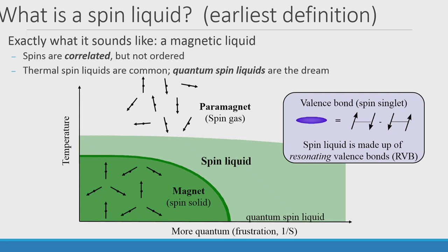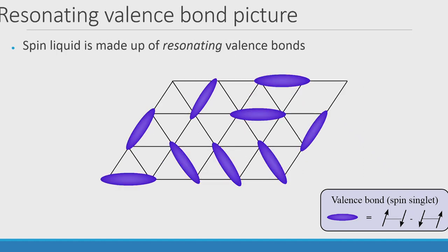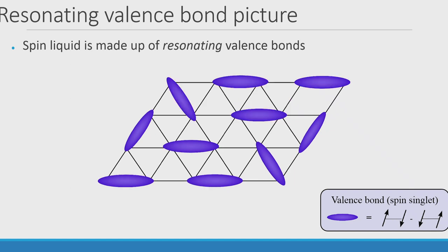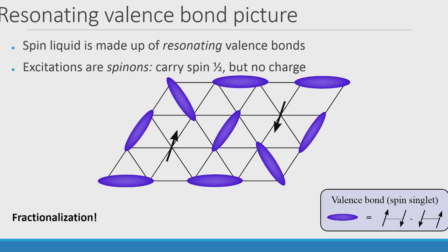This is an example of what a spin liquid is not — a ground state which is an ordered state of valence bonds, breaking both rotational and translational symmetries. Spin liquids are more complicated: they are made of resonating valence bonds existing in quantum superposition across an infinite number of configurations. One key feature is fractional excitations: you can break a valence bond, move the two spin-1/2 excitations apart freely by flipping valence bonds — they carry the spin of an electron but not its charge.